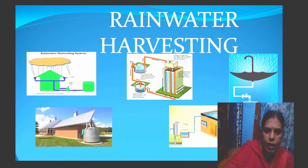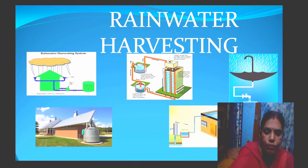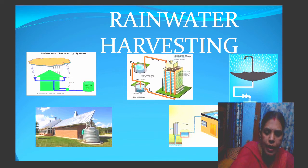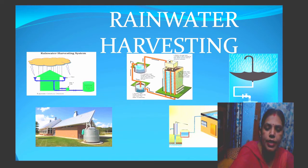The first method is rainwater harvesting. It is a method of direct collection of rainwater from the rooftops of houses or other buildings. The rainwater can be collected during the rainy season through pipes into an underground tank, which helps to increase the underground water table.